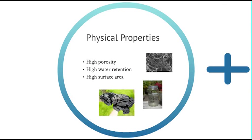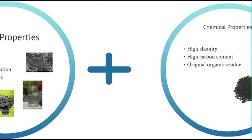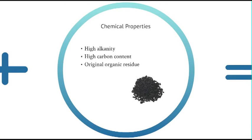The physical properties of biochar include high porosity, water absorption capacity, and surface area. Due to these properties, it can retain more pollutants. The chemical properties include high alkalinity, high carbon content, and original organic residue.